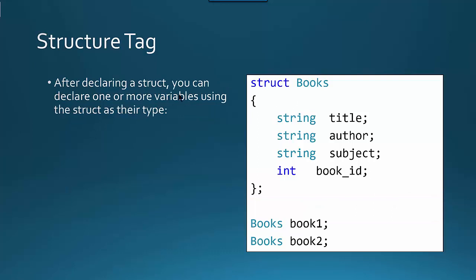Once you've declared your struct, you can declare variables using that struct by using the name of the struct as the type of your object. So here we can see that book1 is a books, and book2 is also books. Book1 has a title, an author, a subject, and a book ID. Book2 also has a title, author, subject, and book ID — however, book2's values will be different than book1's. The struct, in effect, is just a template for how we want to store information for these books.